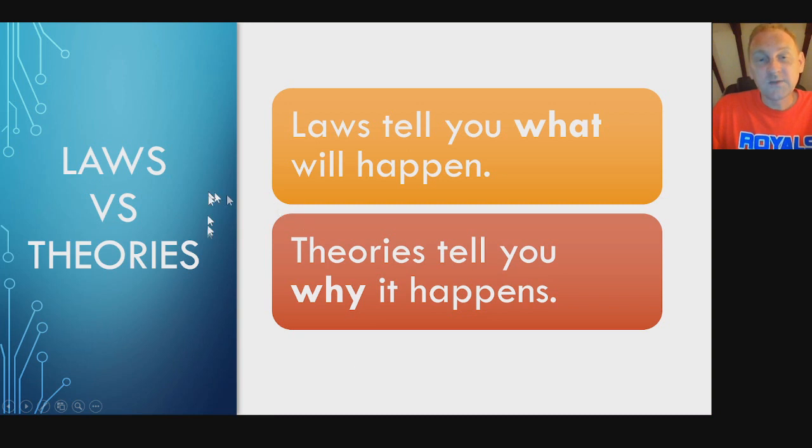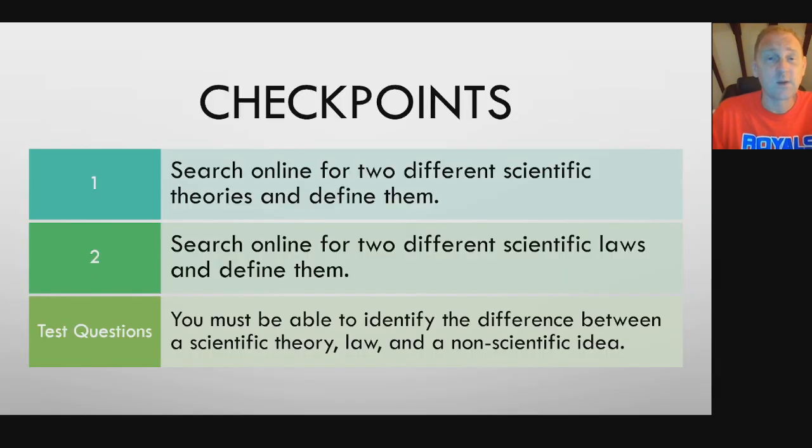So laws versus theories. Laws tell you what will happen. Based on laws of every action has an equal and opposite reaction, we know that when these two balls hit, we know what will happen. They're going to bounce off of each other. Theories tell you why it happened. They try to explain why they're bouncing off of each other. So it's important that you can identify the difference between laws and theories and actually be able to identify if this even is a law or theory or just some other idea. That's what I want you guys to understand.